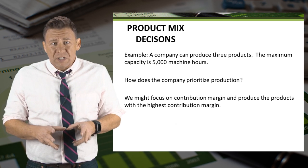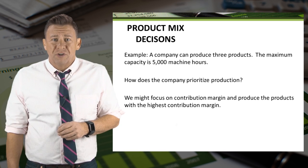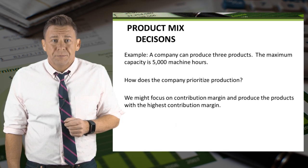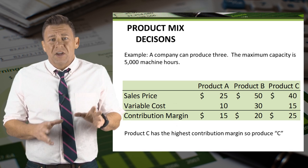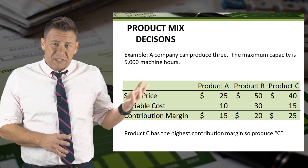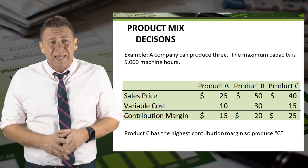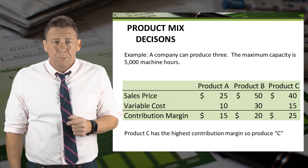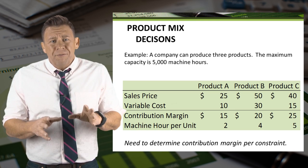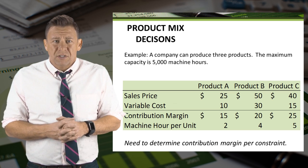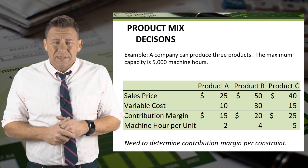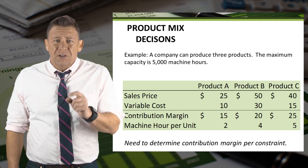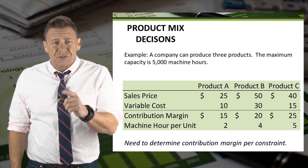We might focus on producing the products with the highest contribution margin. Based on what we've learned so far, that seems logical. Here we see the contribution margin for all three products. Based on this data, product C has the highest contribution margin of $25 per unit. If we were not constrained by machine hours, that logic makes sense. But since we are constrained, we really need to look at the highest contribution margin per constraint.